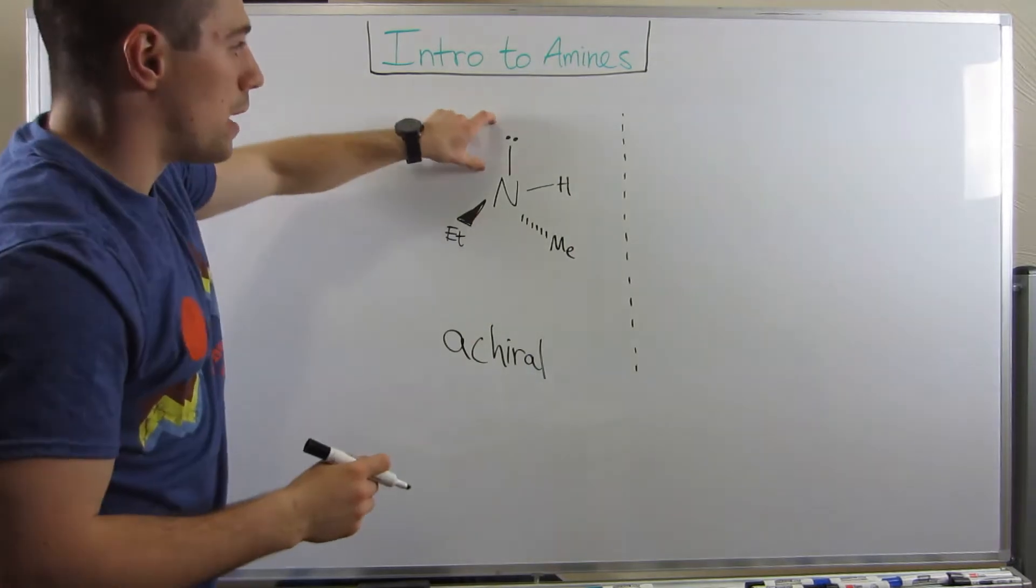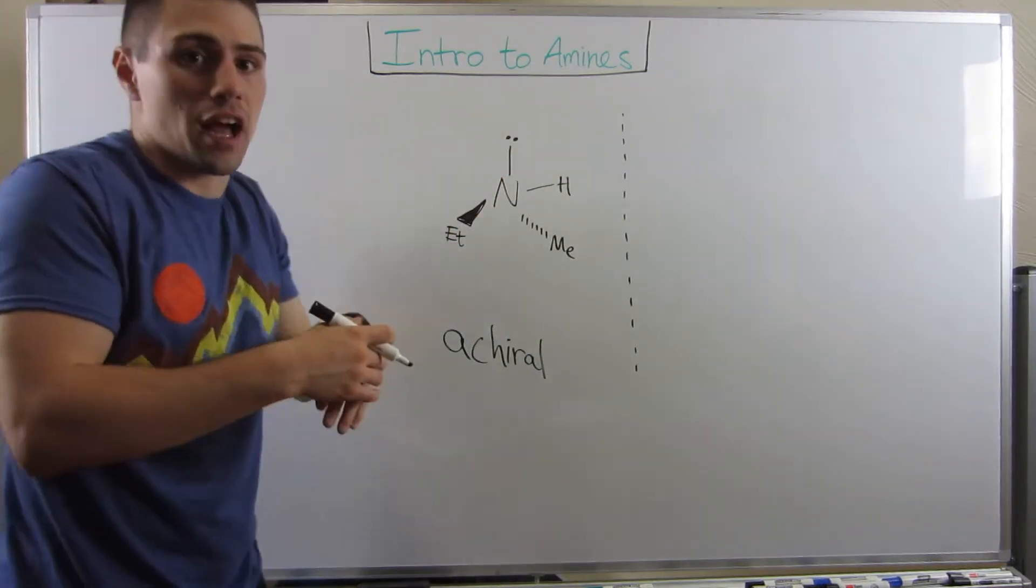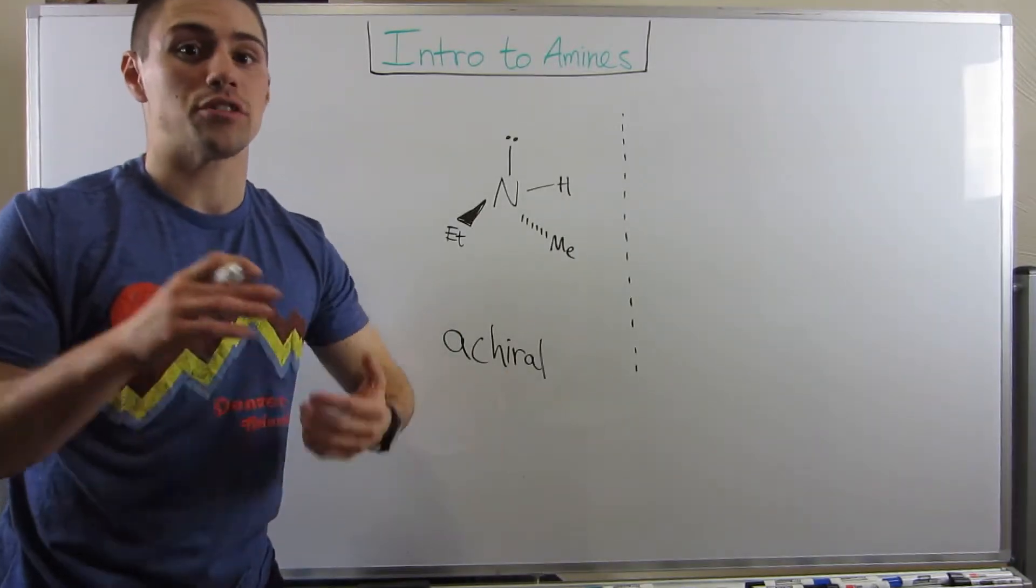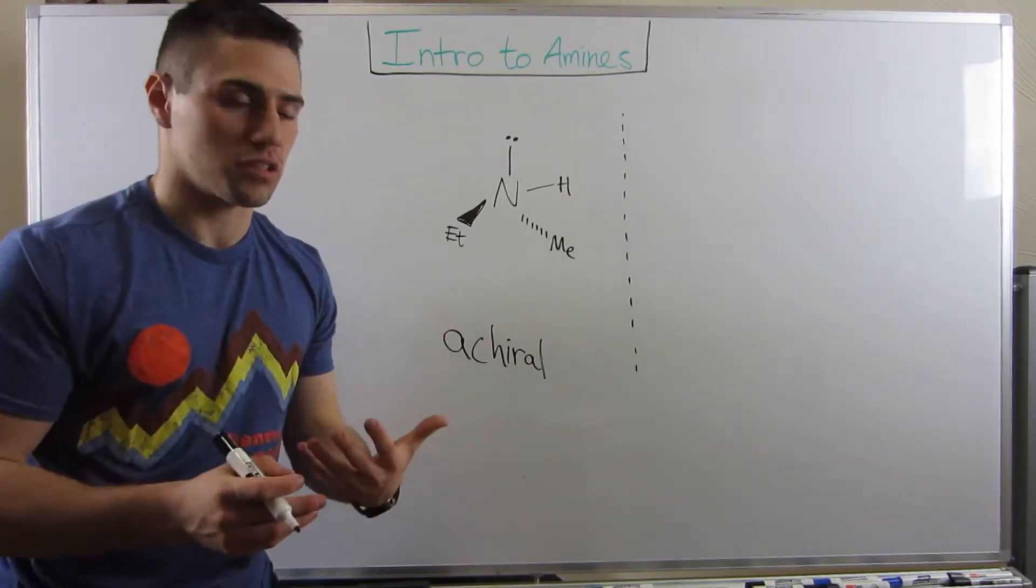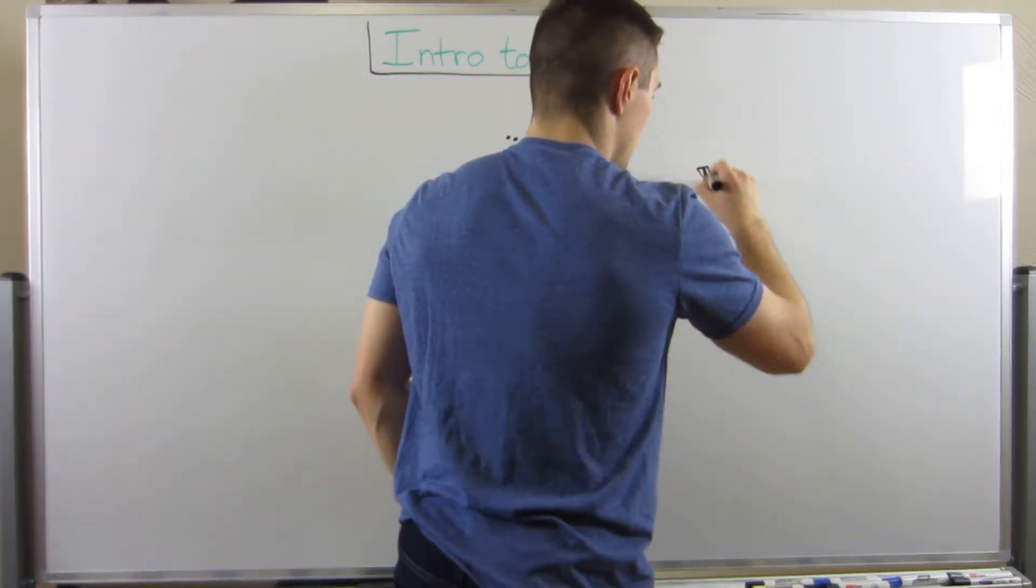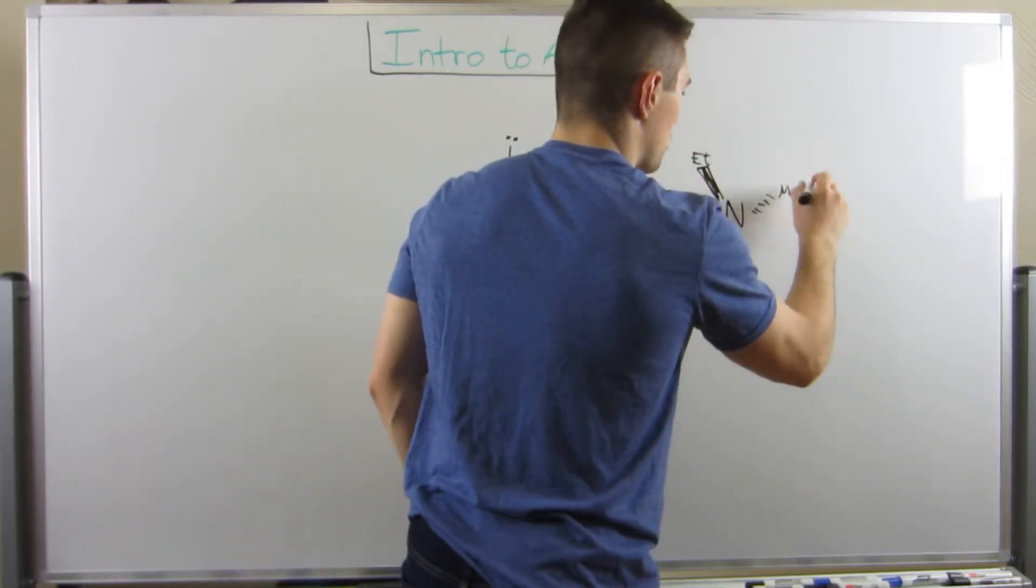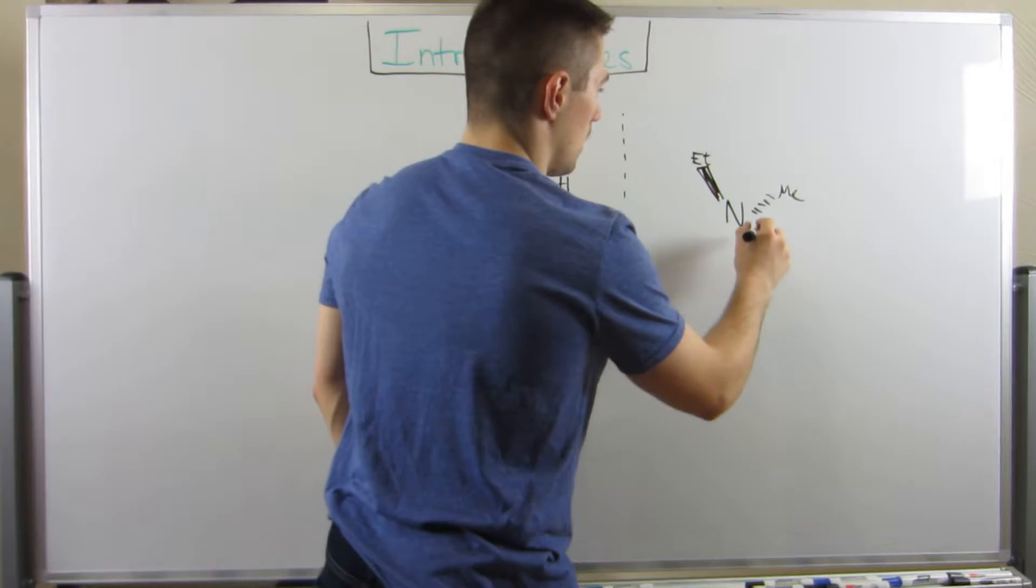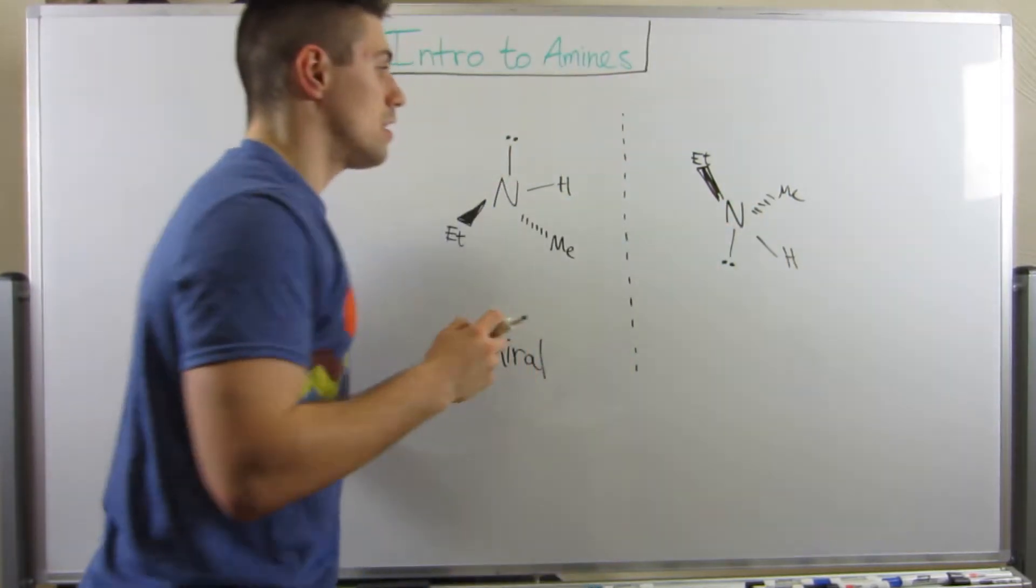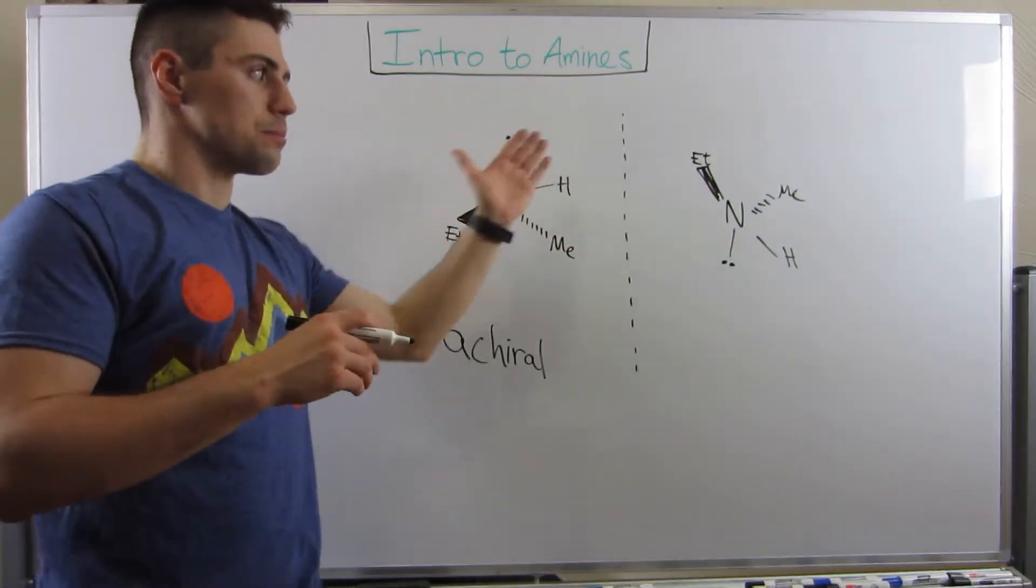What amines do at any given time is that they invert themselves. What happens is this lone pair actually flips, and everything inverts, just like you would expect when we did SN2. There's almost like an inversion of the molecule. The methyl groups flip up, hydrogen flips down, and so does the lone pair.